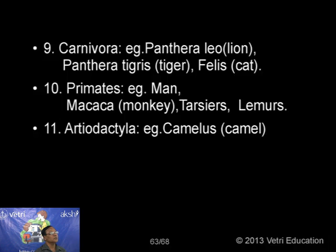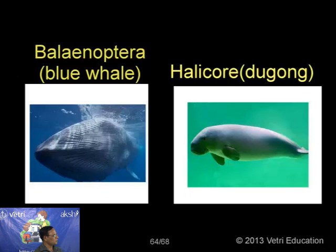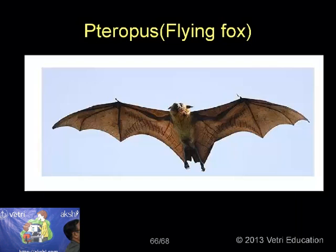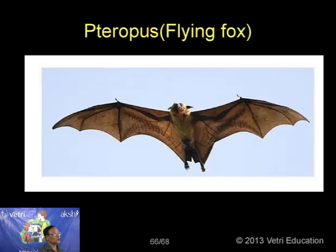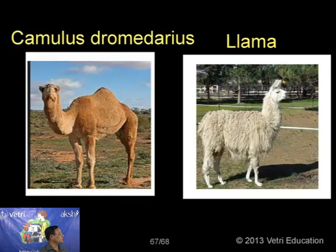We have pictures of all these — the blue whale, the Halicore dugong normally known as the sea cow, Tarsius and lemur belonging to primates, and Pteropus the flying fox with a long patagium able to move for a long distance. The camel and llama — both closely related — and in these two animals only, the RBCs are nucleated and oval or elliptical in shape.